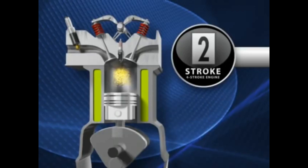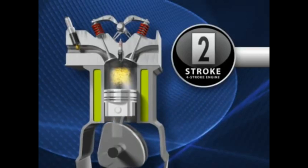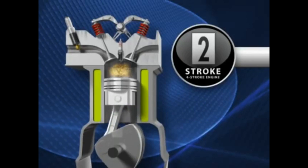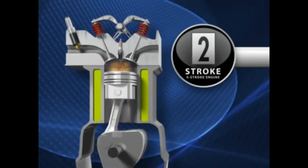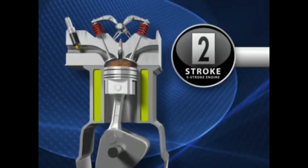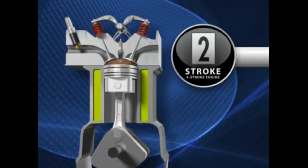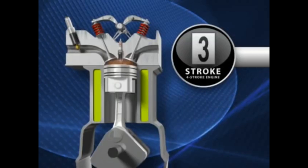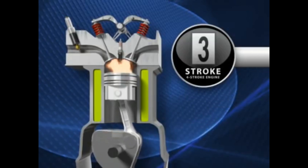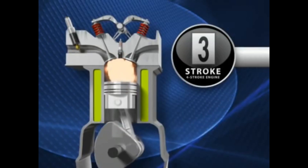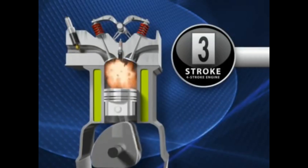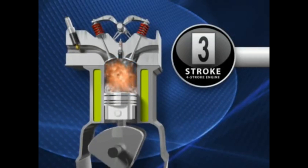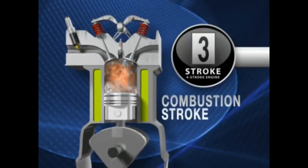On the second stroke, the piston travels upward, compressing the air and fuel to make a highly combustible mixture. This is called the compression stroke. At this point, the spark plug fires, sending the piston downward from the expansion of the air and gas mixture. This is the combustion stroke.